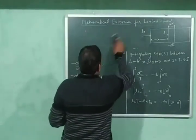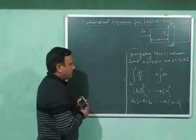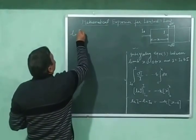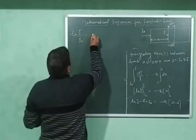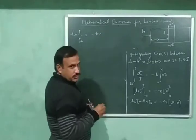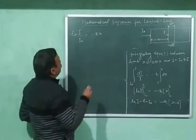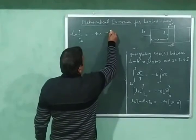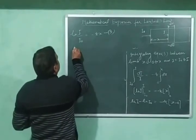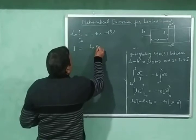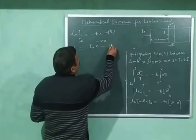This gives us natural log of I minus natural log of I₀ equals minus k times (x minus 0). Since log m minus log n equals log(m/n), this becomes natural log of I upon I₀ equals minus kx — equation number three. This equation is further written as I equals I₀ times e raised to the power minus kx — equation number four.